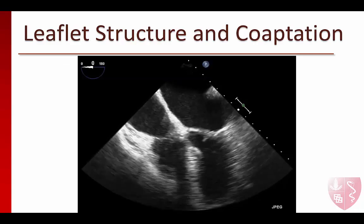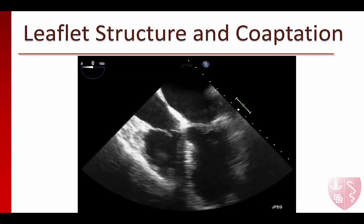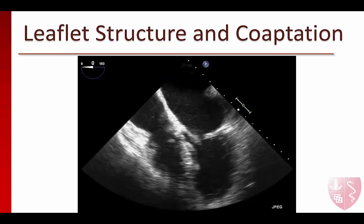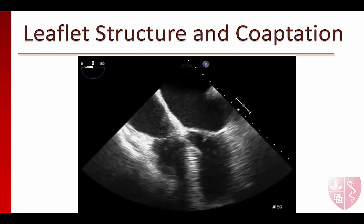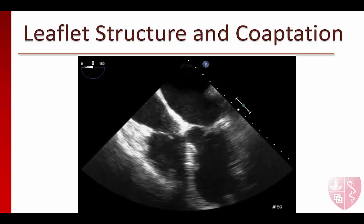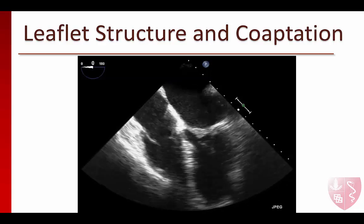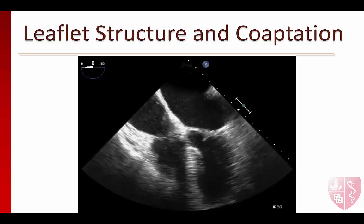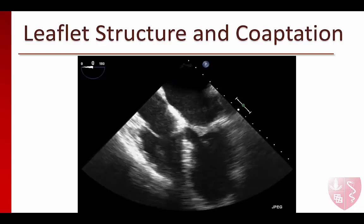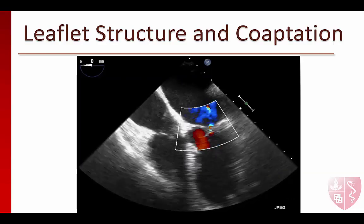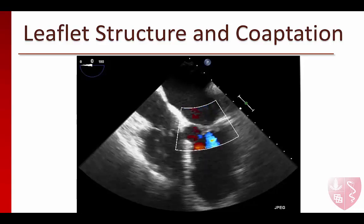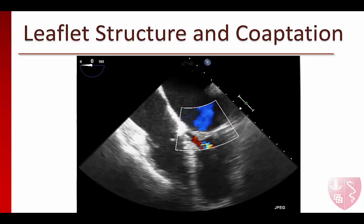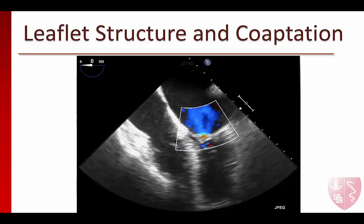This is a mid-esophageal four-chamber view showing a mitral valve with thickened leaflet tips and restricted leaflet motion characteristic of rheumatic mitral valve disease. This is an example of Carpentier's type 3A MR. When we put color flow Doppler over the valve, we see a central jet of regurgitation.